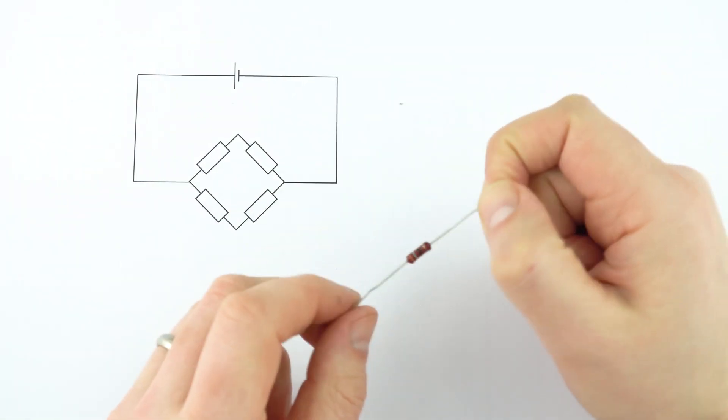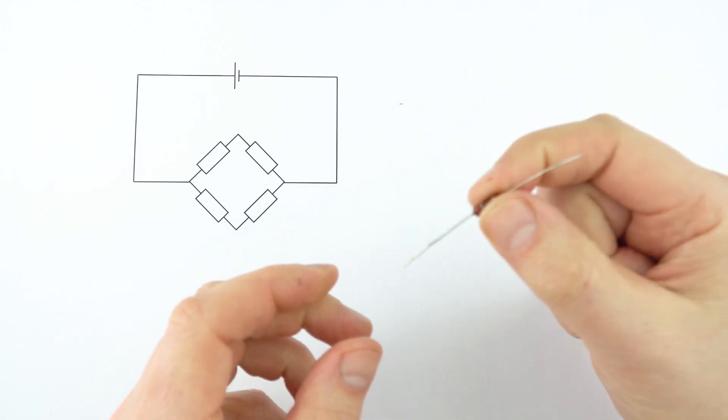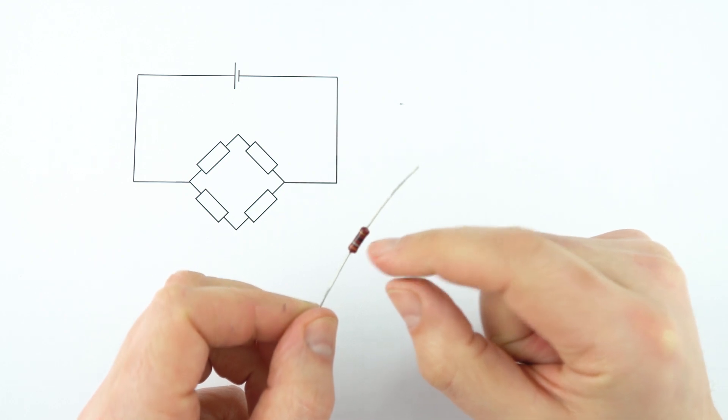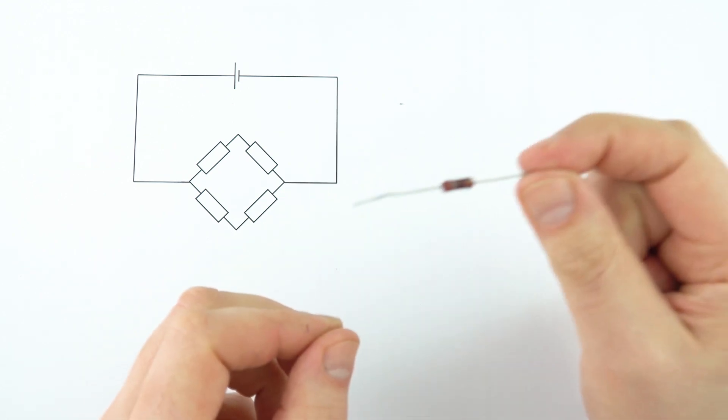Now, perhaps we have a resistor with an unknown resistance and we want to measure it. Perhaps we can't remember how to read the colored bands, or maybe we just want to verify the resistance of it.